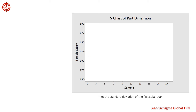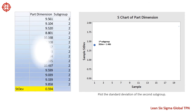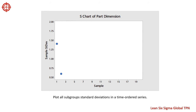Here is the data from the first hour. For subgroup 1, the standard deviation is 1.406, and this is the first point on the S chart. Here is subgroup 2; the standard deviation is 0.594, and this is the second point on the S chart. We continue this for the 18 remaining subgroups and then connect the points.